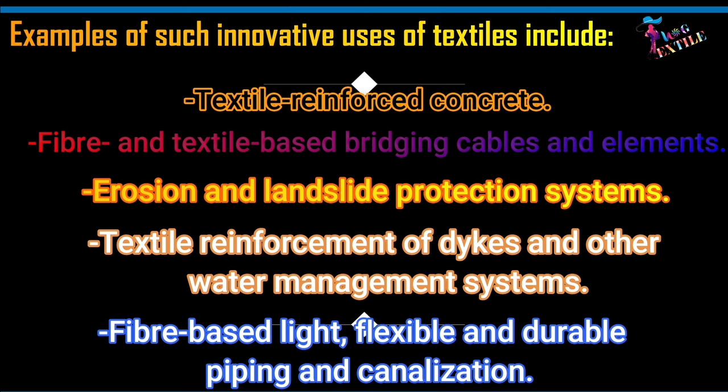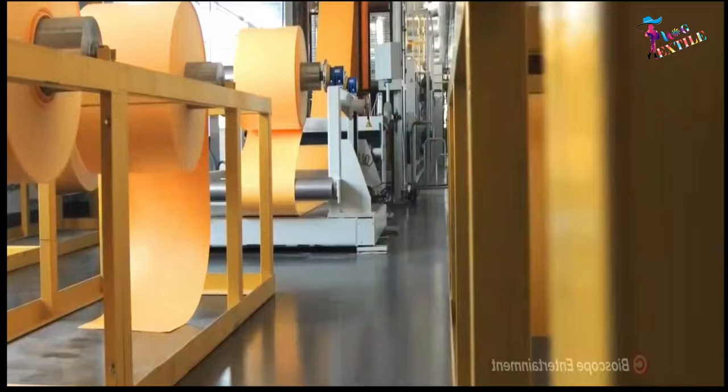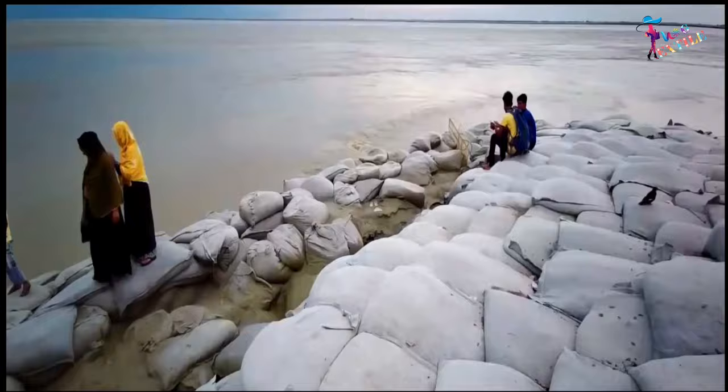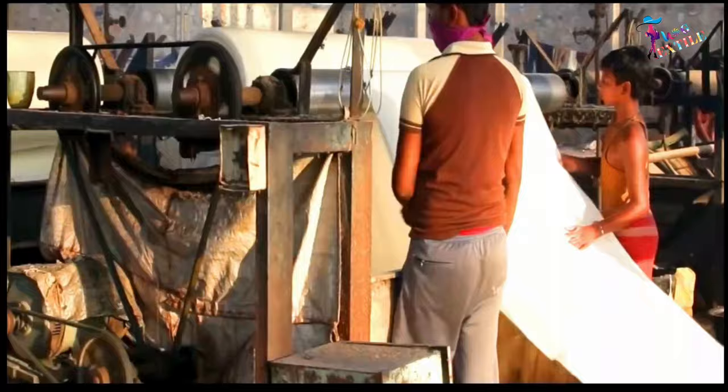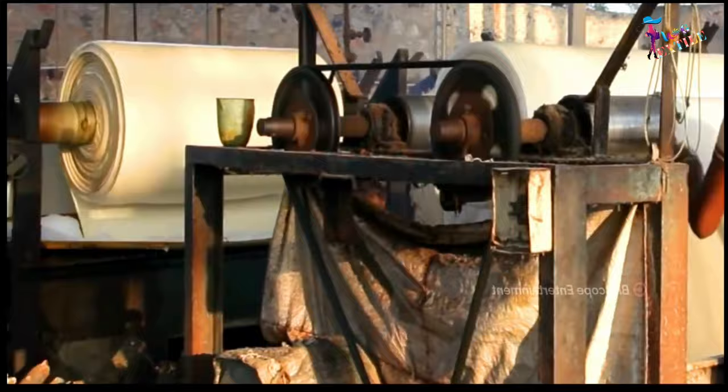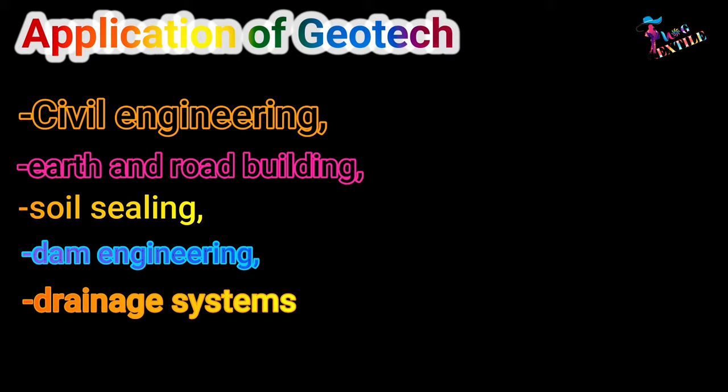Construction textiles also include textile reinforcement of dikes and other water management systems, and fiber-based light, flexible, and durable piping and canalization. Geotech, or geotextile, is a kind of technical textile manufactured from man-made and natural fibers. Worldwide, geotextiles are increasingly being employed to address infrastructure threats posed by deterioration and natural catastrophes. Applications include civil engineering, earth and road building, soil sealing, dam engineering, and drainage systems.